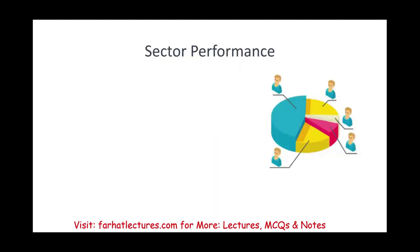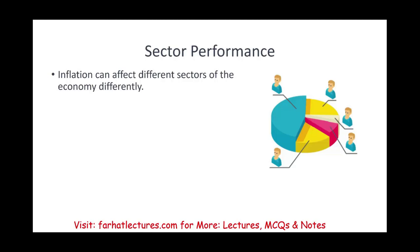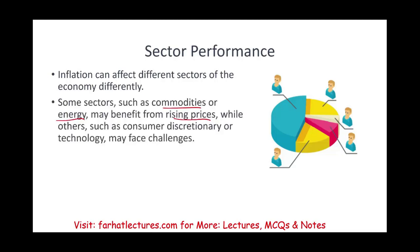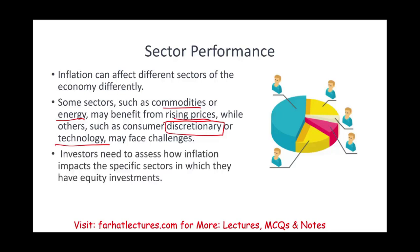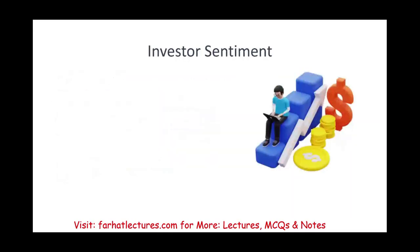Not all companies are affected the same way — certain sectors are impacted differently. Sectors like commodities and energy may benefit from rising prices because consumers must buy energy and essential commodities regardless of price. Meanwhile, consumer discretionary and technology sectors are hurt because consumers can choose not to buy the latest technology or non-essentials when prices rise. Investors need to assess how inflation impacts the specific sectors in which they hold equity investments.